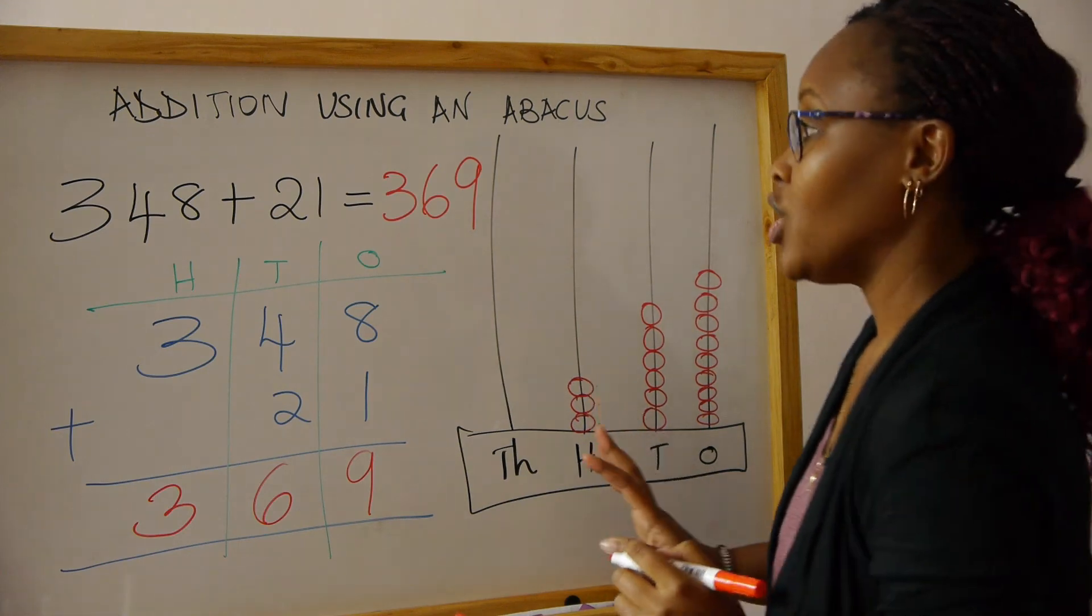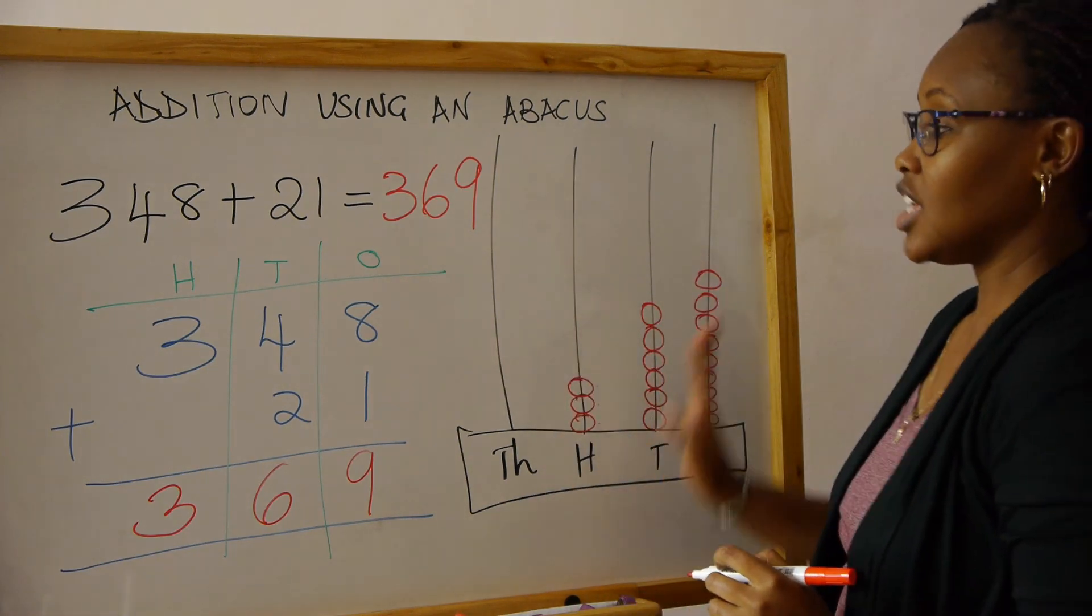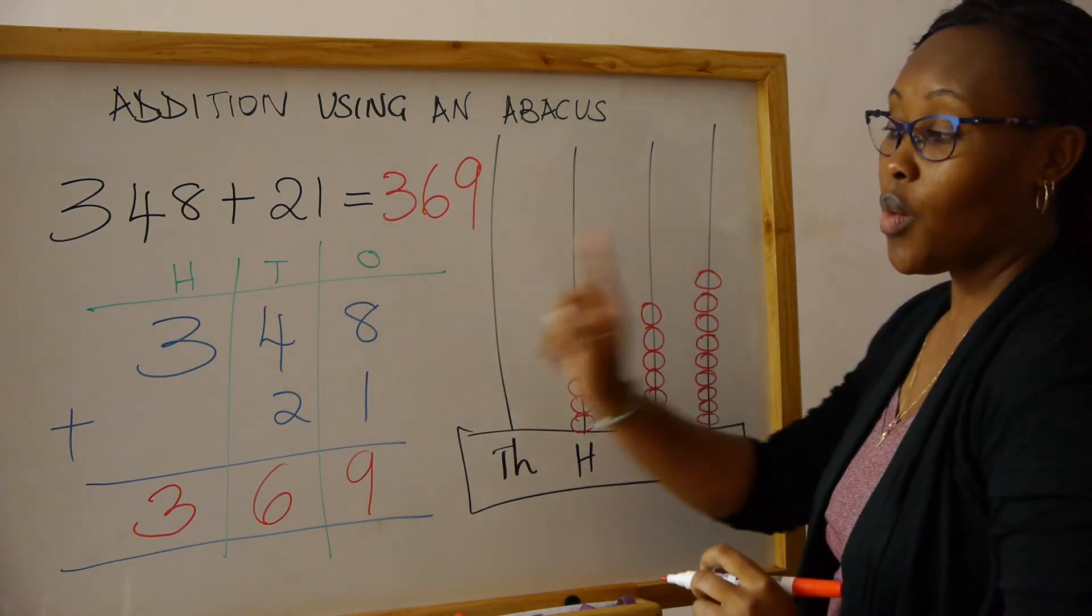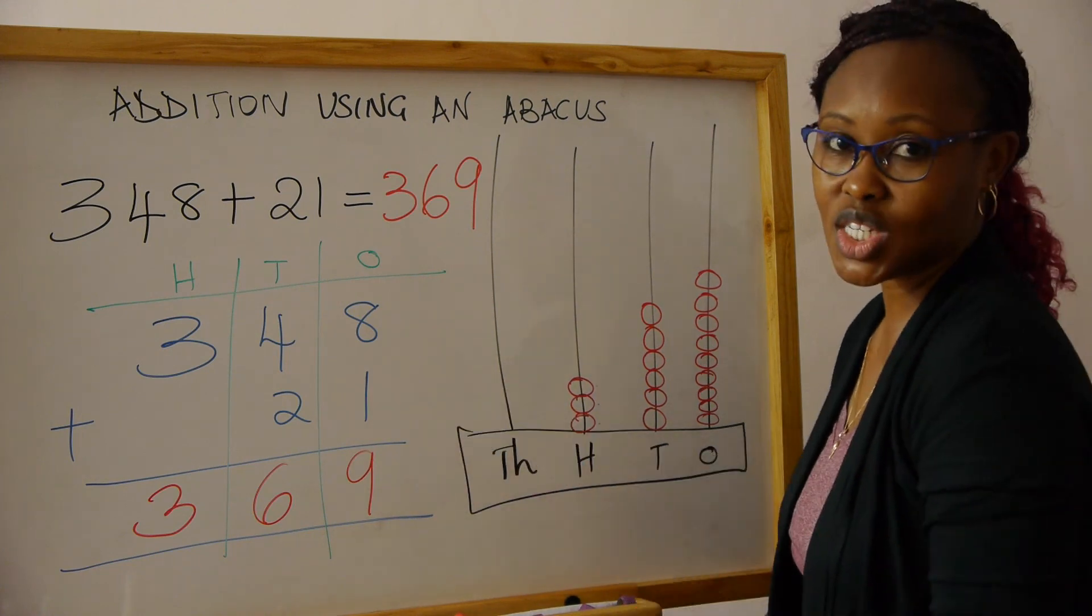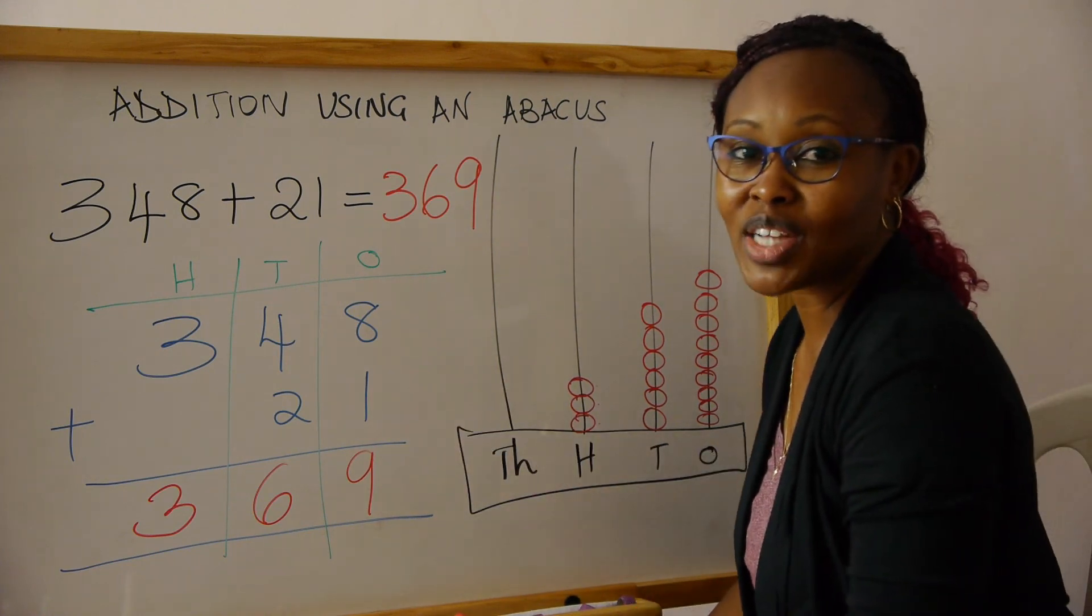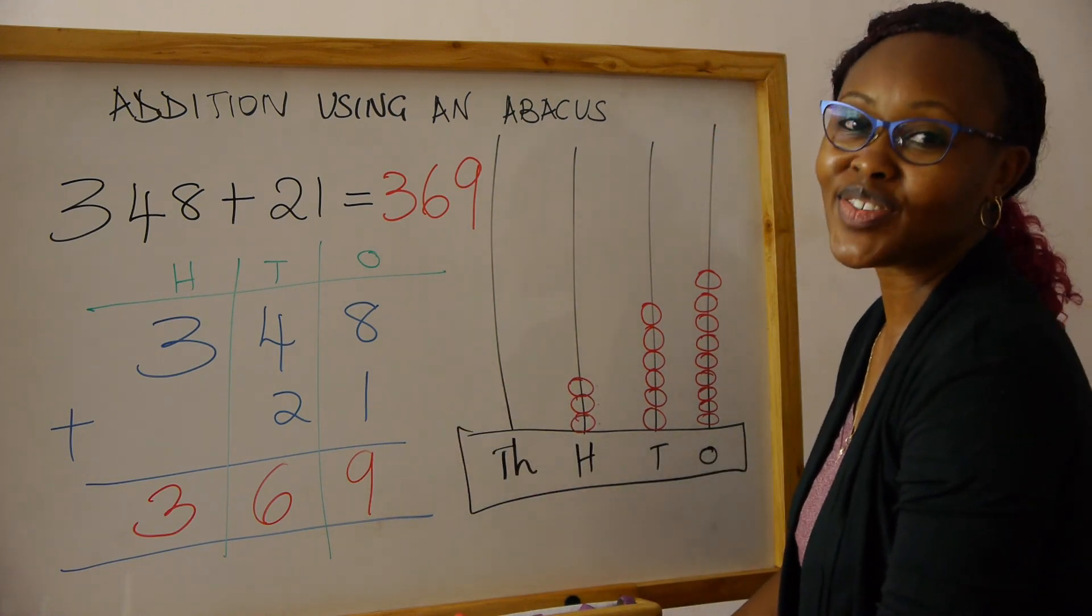And that is how you can use an abacus to add numbers where one of them is a three-digit number. Thank you very much for watching, and have a wonderful day.